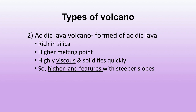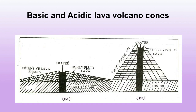The second type is acidic lava volcano, formed of acidic lava rich in silica. It has a higher melting point, is highly viscous and solidifies quickly, so higher landforms with steeper slopes are formed. The difference between acidic and basic lava volcano cones can be seen in the diagram — the basic type produces lower landforms and the acidic type produces higher ones.